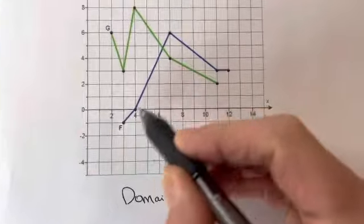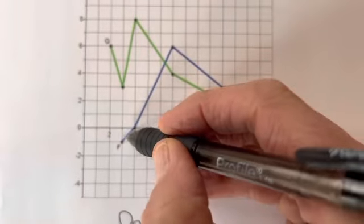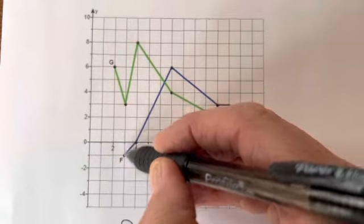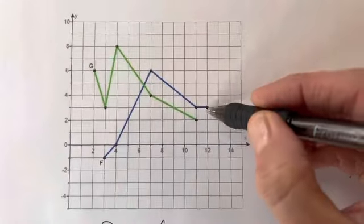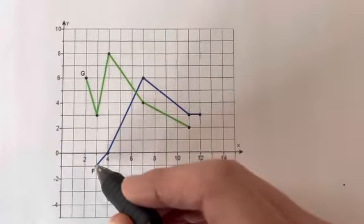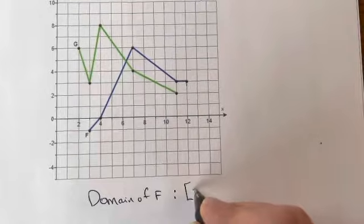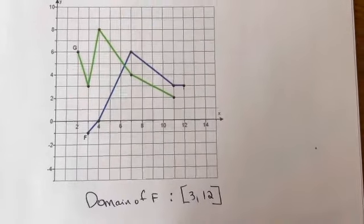The domain of f is this line right here, and remember domain is your x values. From right here, I can see it's 3 to 12. These are filled in points, so it includes 3 to 12. So if I was asking for the domain of f, it would be 3 to 12. That's the domain of f.